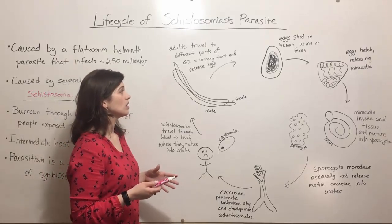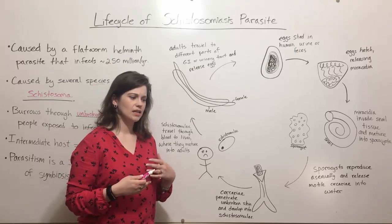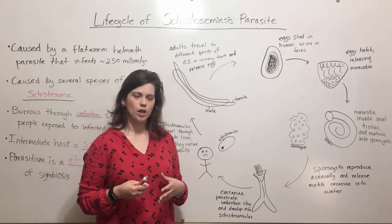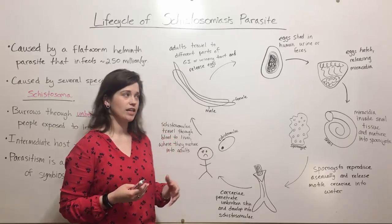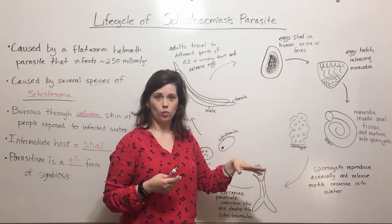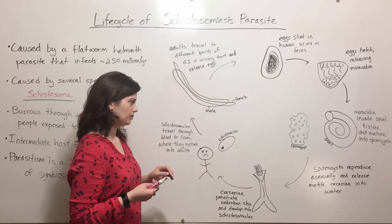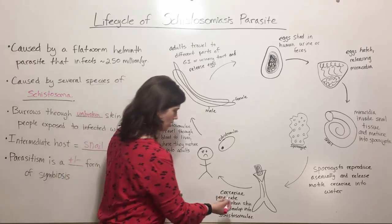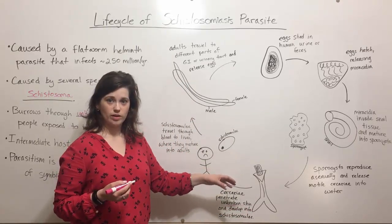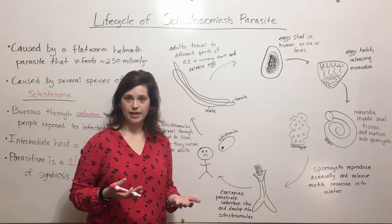We typically don't hear about schistosomiasis in the United States. It is mainly a tropical disease and a much bigger concern among developing nations, because countries like the United States with proper public health infrastructure and sanitation don't have human urine and feces coming into contact with water that people spend time in, which helps break the chain of transmission. Also, if a person does not have bare skin in contact with infected water, that also breaks transmission.